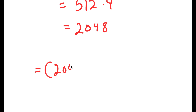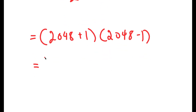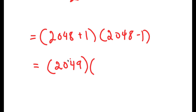So now I get 2,048 plus 1, times 2,048 minus 1. Now, 2,048 plus 1 is equal to 2,049, and 2,048 minus 1 is equal to 2,047. So I have 2,049 times 2,047.